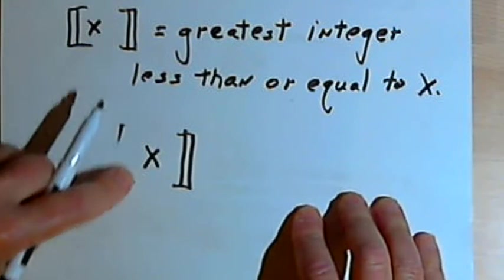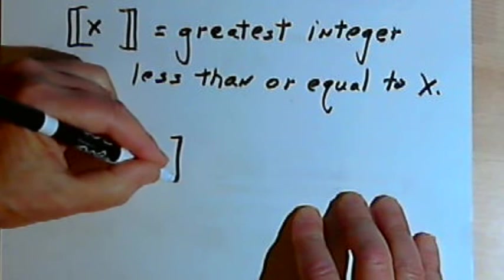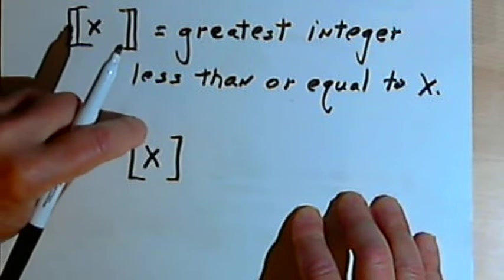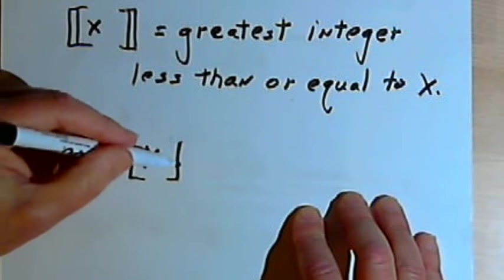Now sometimes what you'll see is just a pair of brackets, and sometimes the brackets may have the tops cut off so it looks like an L and a backwards L.